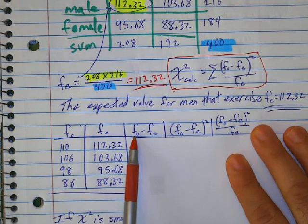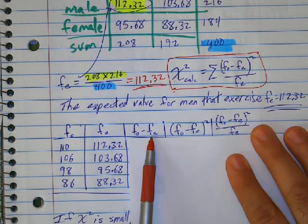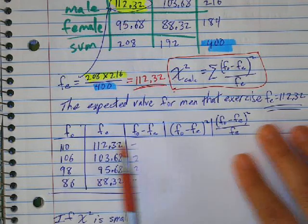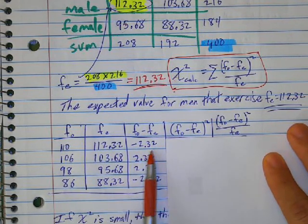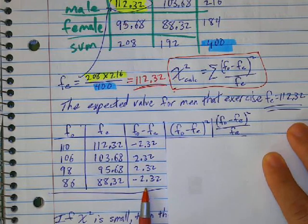And then we do the observed frequency minus the expected frequency. So this one minus this one gives me negative 2.32. These aren't always supposed to be the same, but it just happens to be that way this time.